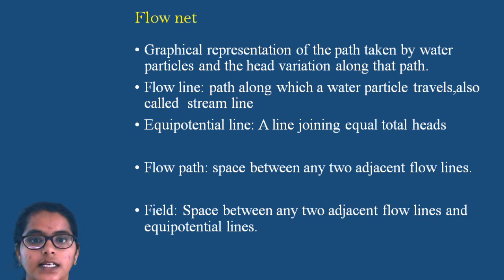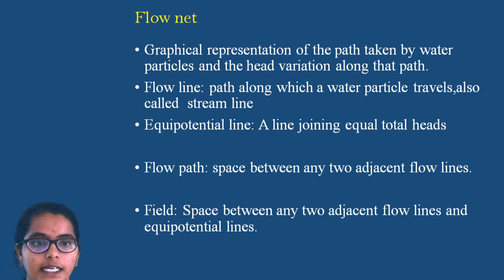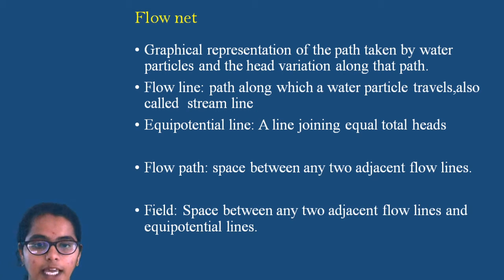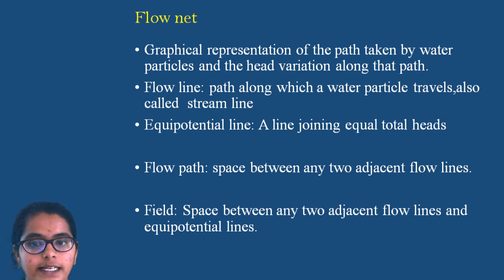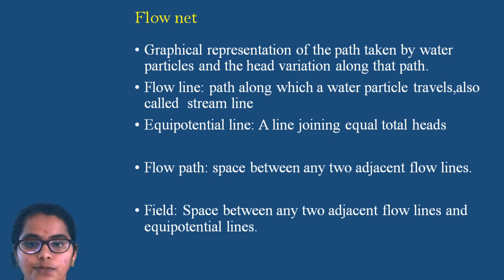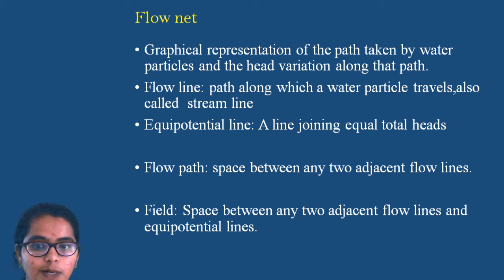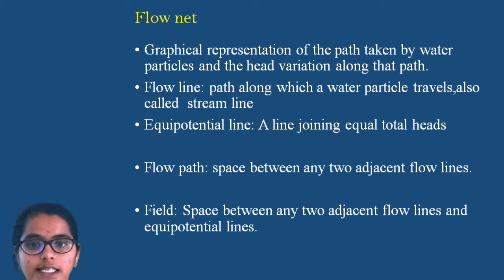Here are some definitions. The path followed by a water particle is called a flow line, also called a stream line. An equipotential line is a line joining equal total heads — it connects points of equal total head. Flow path is the space between two adjacent flow lines. Flow field is the space between any two adjacent flow lines and equipotential lines.